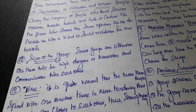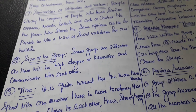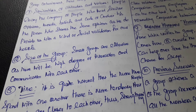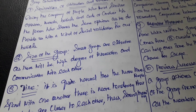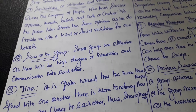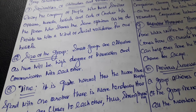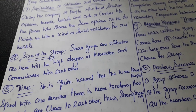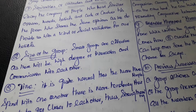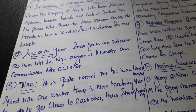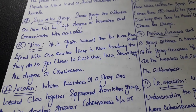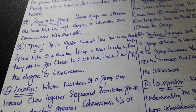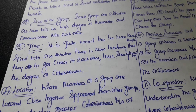The next factor is the size of the group. Small groups are more effective as there is a higher degree of interaction and communication. If the group size is small or medium, the possibility of interaction and communication is greater, through which group cohesiveness will be higher.